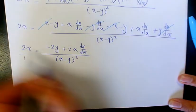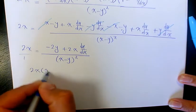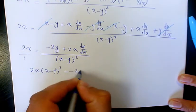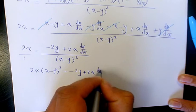Then you cross multiply. It's gonna be 2x times x minus y to the power of 2 equals to negative 2y plus 2x dy over dx.